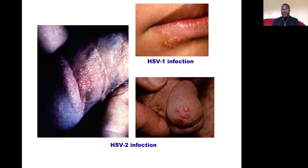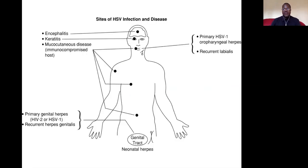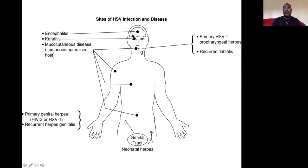Even when patients — especially female patients — are asymptomatic, they keep shedding the virus, and the duration of shedding increases if those patients are HIV-infected. In HIV-positive patients, we also see disseminated HSV infection, including encephalitis, keratitis (infection in the eye), mucocutaneous lesions, and genital lesions — all resulting from the reduction of their immune system.